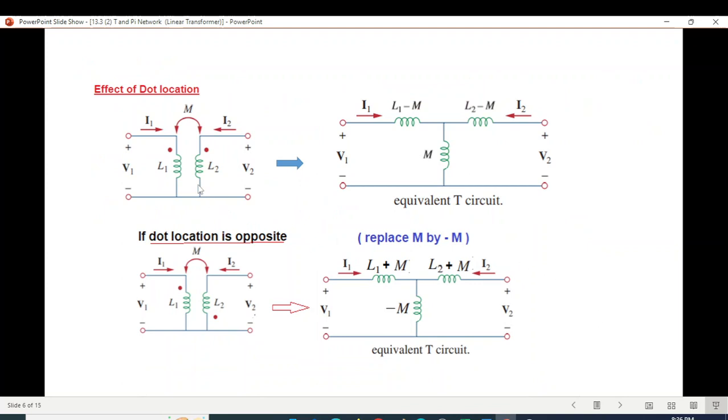One point to remember: if the dots are so that the current is entering both dots, then this circuit is valid. But if the position of the dot is so that current is entering in one and leaving in the other, then M will be replaced by negative M. So our circuit equations will now be like this.